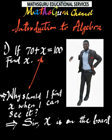Each time we teach algebra in the classroom, we give questions to students. We always have a funny response from students all the time. Like the expression we have here on the screen. If 70 plus X is equal to 100, find X. Some will say we can already see X. We don't need to find X again. Some will say, sir, X is on the board already. So why should I find X? Very funny though. Now, we need to understand the concept of algebra.